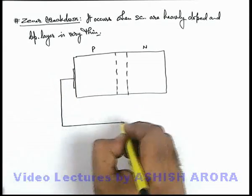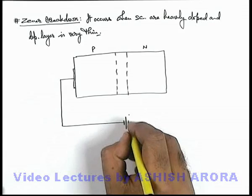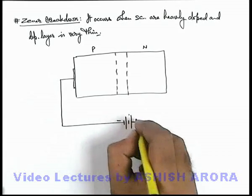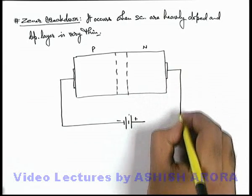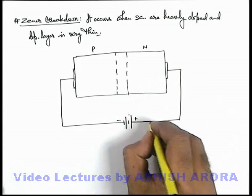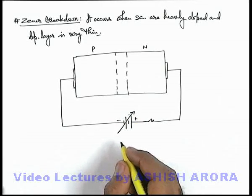And if it is made reverse biased, on the p-side we connect the low potential terminal of the battery and high potential is connected to the n-side. On closing the switch and varying this voltage, we know